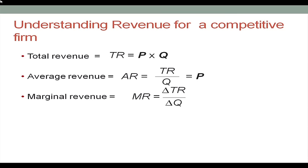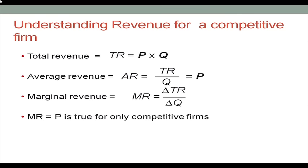For a perfectly competitive firm, since the price for every individual unit does not change — it is given by the market and remains the same — marginal revenue (∂TR/∂Q) equals the price in the market. This is true only for competitive firms. In other market structures, the price changes with different levels of output, and we will discuss those in detail later.